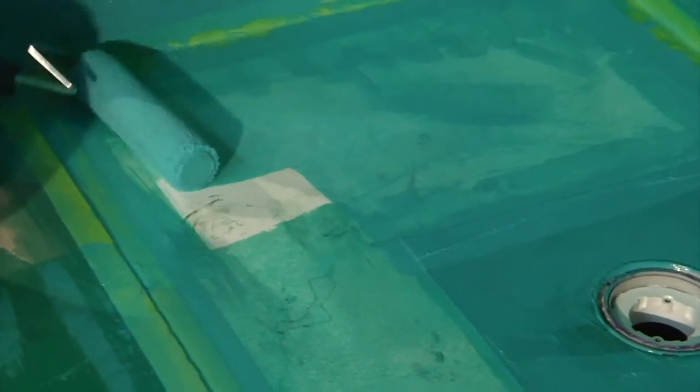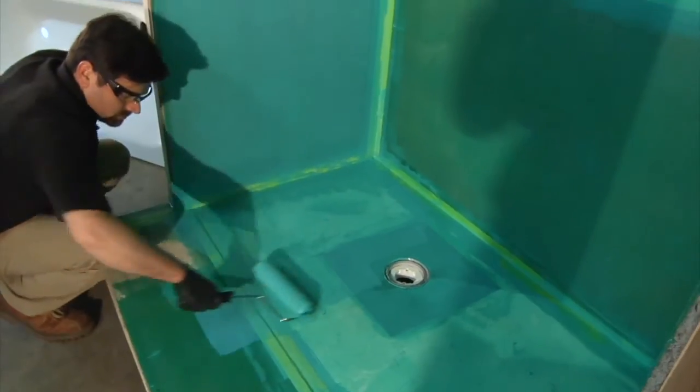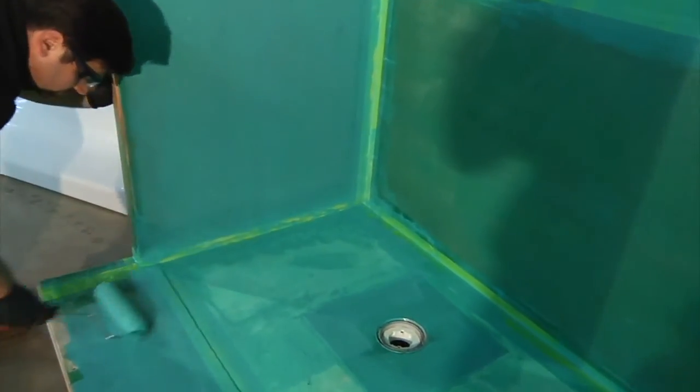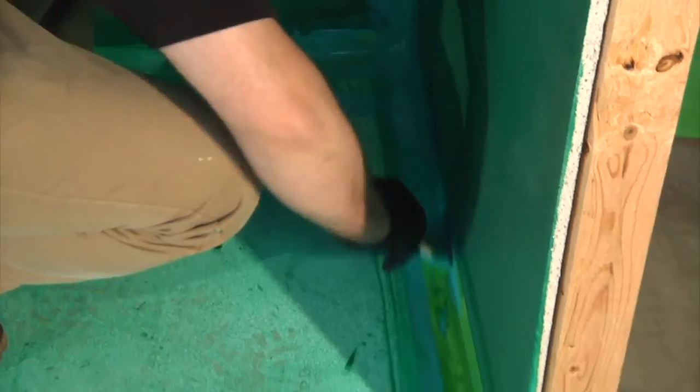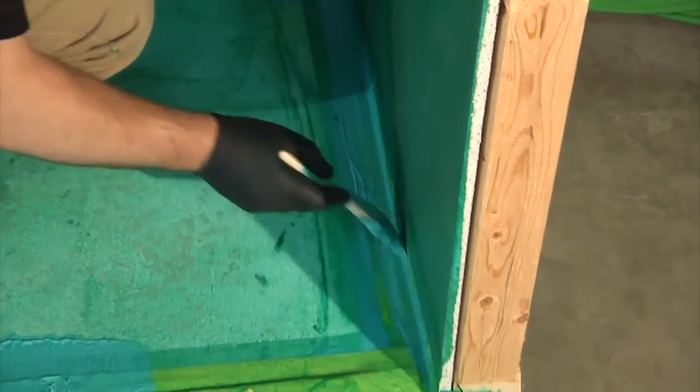Make sure no one walks in the area or disturbs it in any way. Dust can ruin the first coat's ability to bond cleanly with the second coat. Adding the second coat achieves the 40mm thickness the manufacturer requires to make the waterproofing complete.